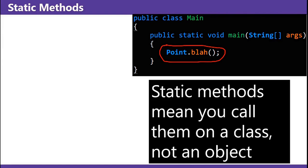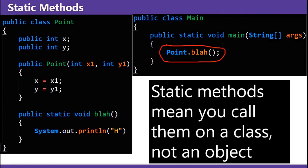Static methods. Static methods mean you call them on a class, not an object. So you have this class Point, and then you're wanting to call the blah method from a different class. So you gotta do Point.blah. You don't need a Point object to call the blah method.